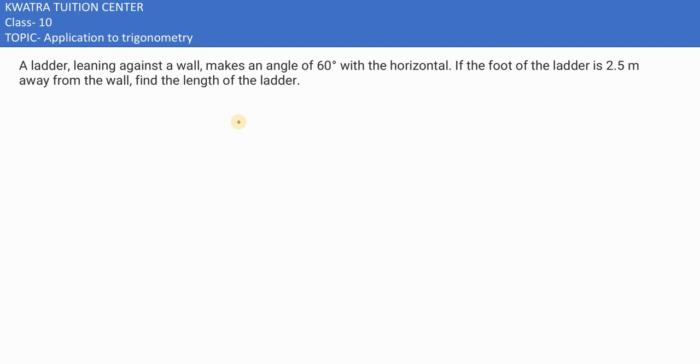Okay, let's move to the third one now. It says a ladder leaning against a wall makes an angle of 60 degrees with the horizontal. If the foot of the ladder is 2.5 meters away from the wall, find the length of the ladder.